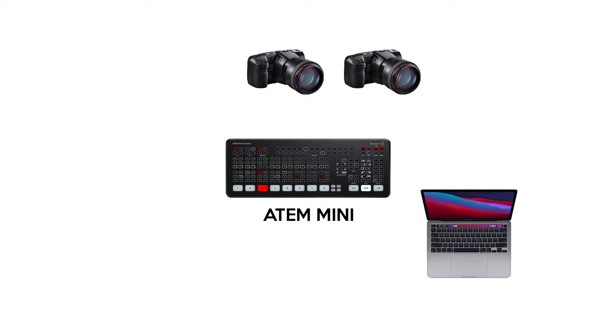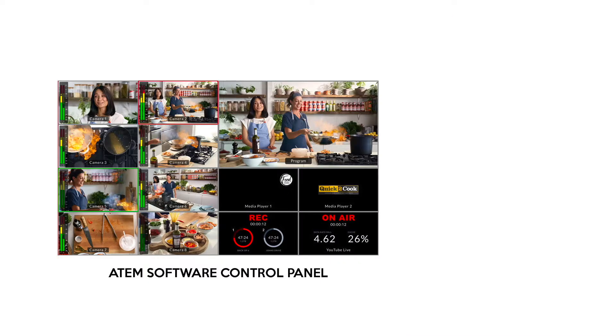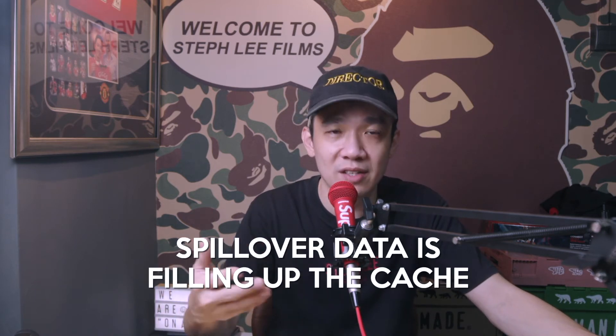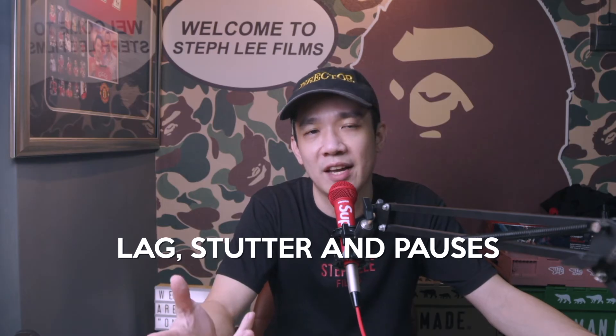Back to the ATEM Mini — take a look at this simple illustration of a typical live stream setup. Assuming you have the basics set up, like streaming keys to your platform (say YouTube), your computer connected to the ATEM Mini switcher, your cameras connected to the ATEM Mini, and everything connected to the internet via Wi-Fi, LAN, or router — you're ready to go live. Then you see your cache starting to fill up: 10%, 20%, 30%, and eventually it says full. What's happening is your ATEM Mini is not sending data to YouTube fast enough compared to what it's receiving from sources, so the spillover fills up the cache. When the cache is full, your live stream starts to lag, stutter, and have pauses every few seconds, making it extremely unpleasant to watch.